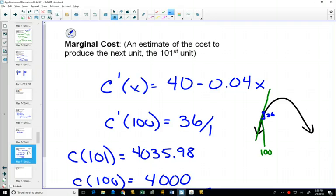So if I go over 1 and up 36, that 36 represents where it would be at 101. And so that's why it's an estimate for the next unit. Because the slope is something over 1, rise over run.